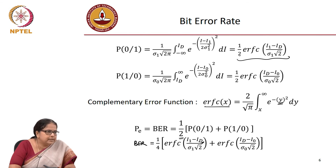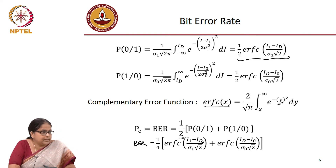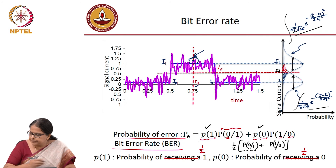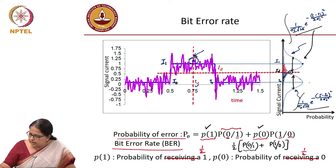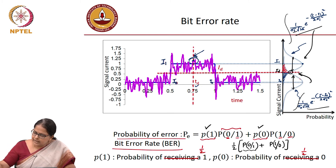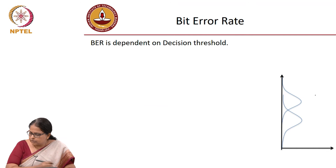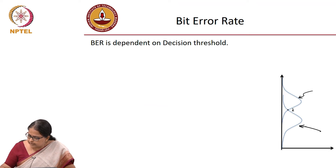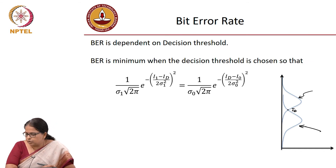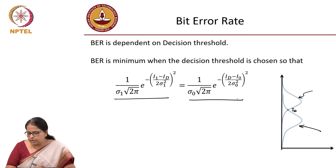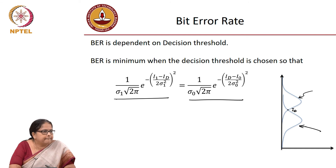So it is important to formally define the decision threshold iD, rather than just using intuition that it is the point of intersection of the two curves. You can actually define what that point of intersection is. To find the decision current iD, you equate the two distributions at that point: this distribution and that distribution at iD must be equal. So you substitute iD into both distributions and equate them.